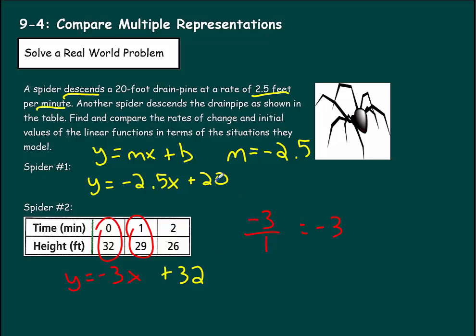So what can we say about this? Spider 2 is starting at a higher level — it's crawling down a longer drain pipe than spider 1 by about 12 feet. However, spider 2 is crawling down at a faster rate, decreasing its height faster. Spider 1 goes down 2.5 feet per minute, while spider 2 goes down 3 feet per minute.